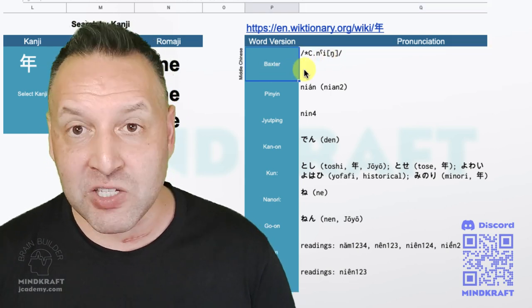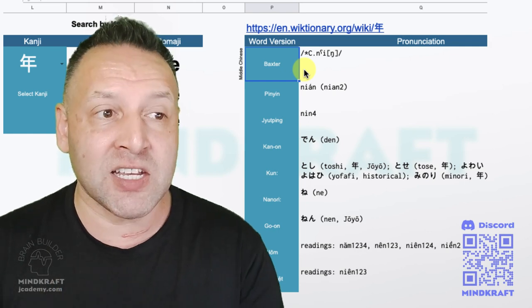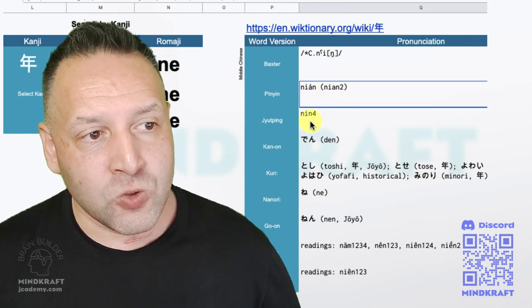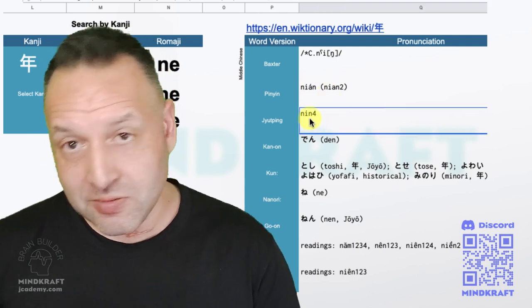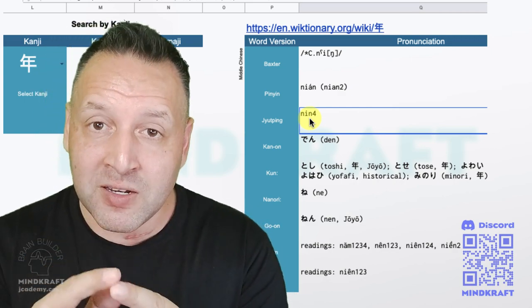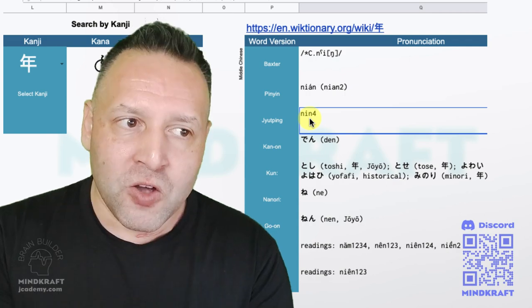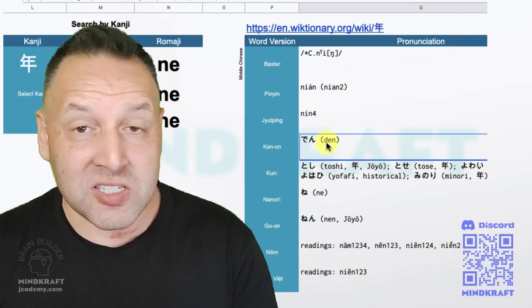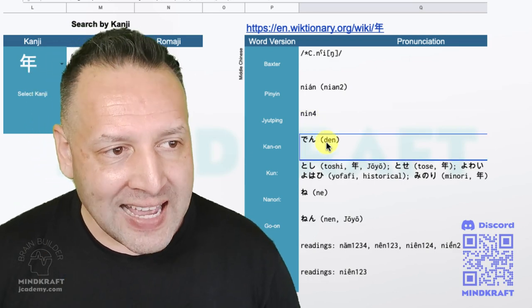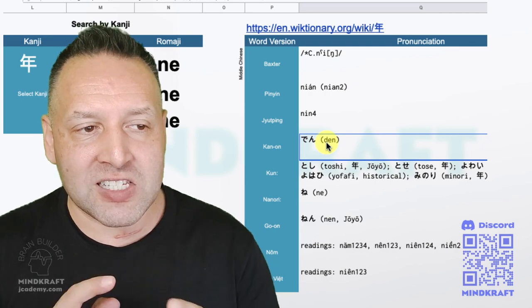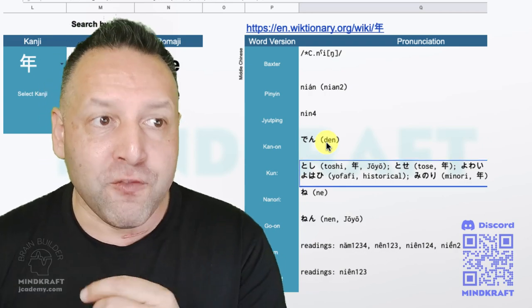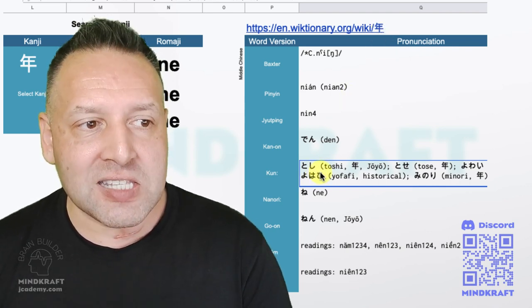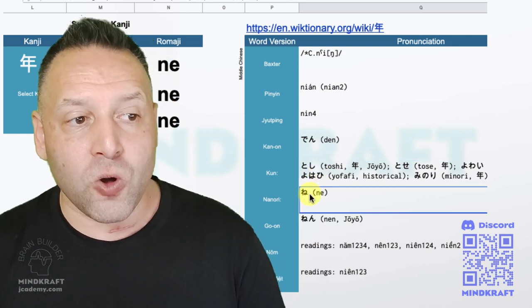Baxter-Sagart is one style of middle Chinese pronunciation or reconstruction. It's got the pinyin, so this character is nian. Or in Jyutping is nin. Nin is, so we've learned before, the second tone in Mandarin is this pinyang, which turns into pinyang in Cantonese. So nian, nin. Kan-on, so this is the Kan Japanese pronunciation is nen. Then we have the kunyomi, which is basically the Japanese word for year, but they still use the Chinese character. So here we have toshi. So toshi is the Japanese word, the kunyomi pronunciation.